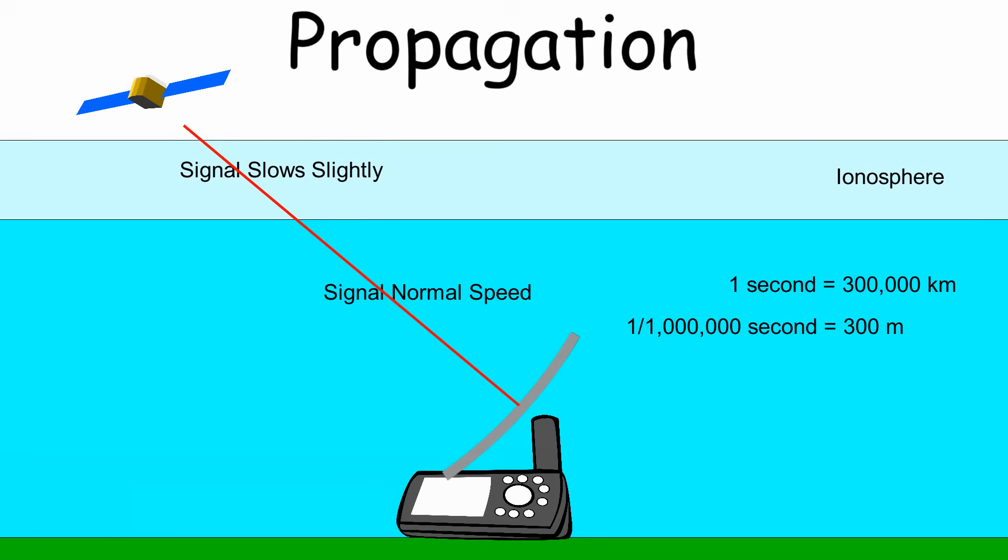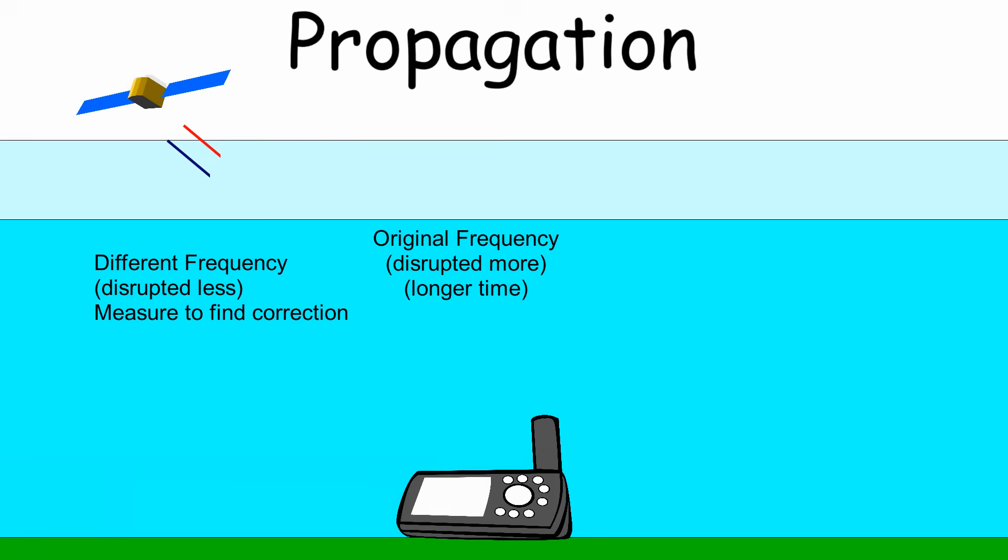GPS can compensate for some propagation errors by transmitting a second signal at a different frequency to the first. Different frequencies are disrupted differently when passing through layers of the atmosphere. Comparing the second frequency to the original gives enough information to work out a correction to apply.